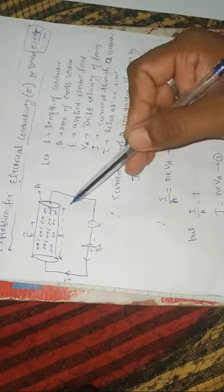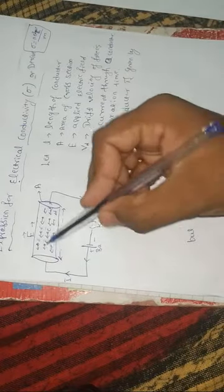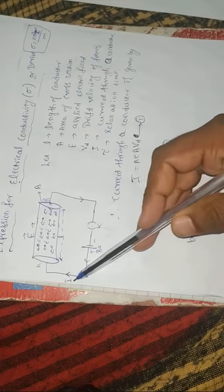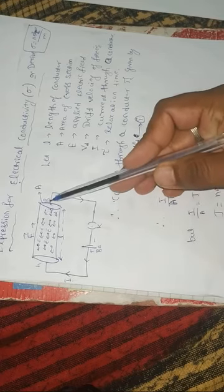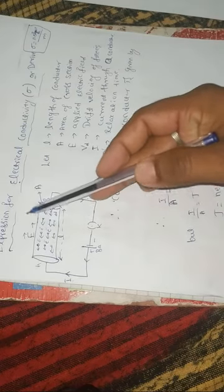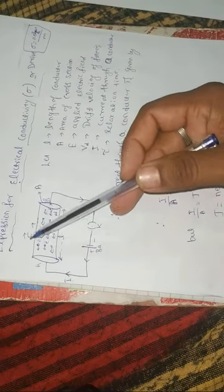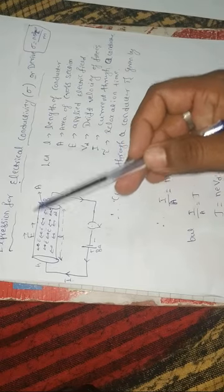This is important. To derive this equation, consider the conductor with ends A and B. The conductor has length L and area A. The electron moves from B to A, so electrons move from B to A. The applied electric field is E.